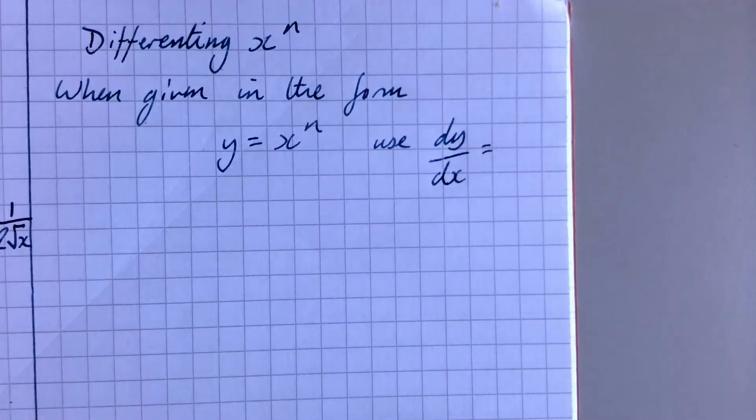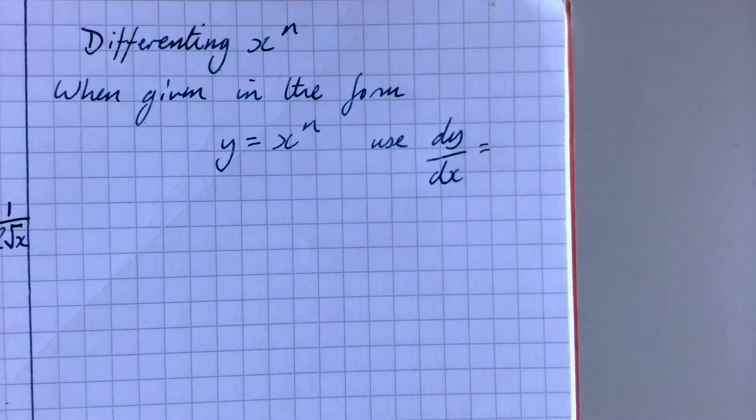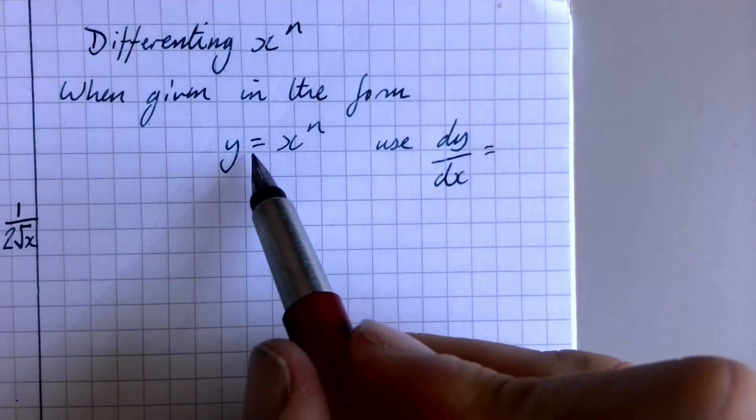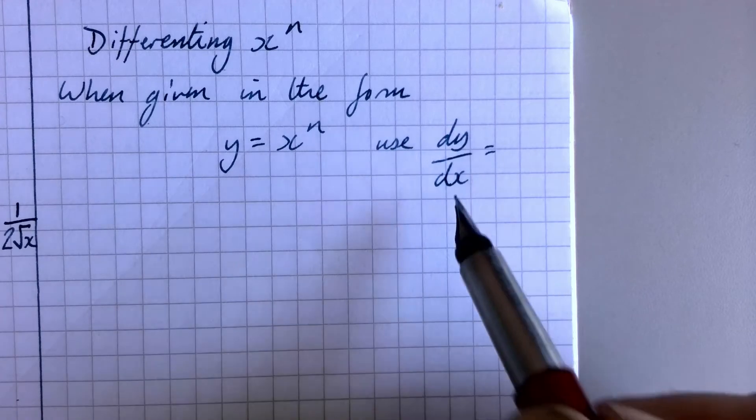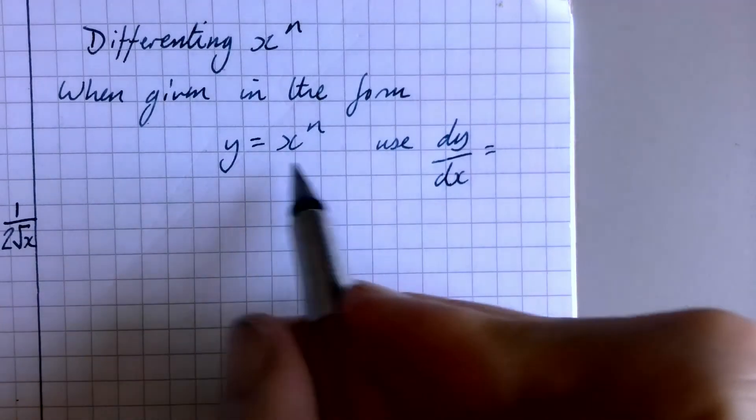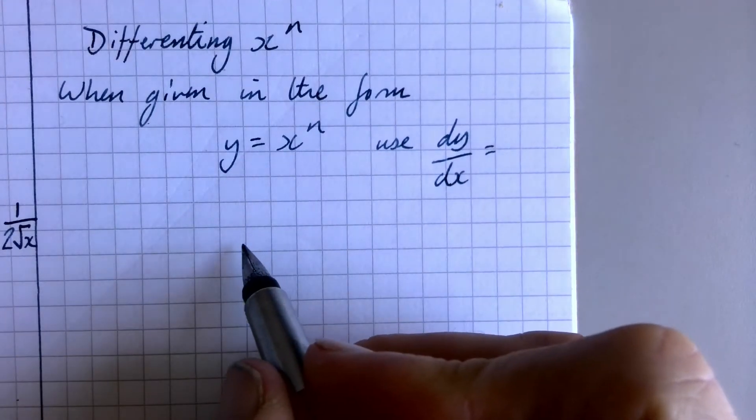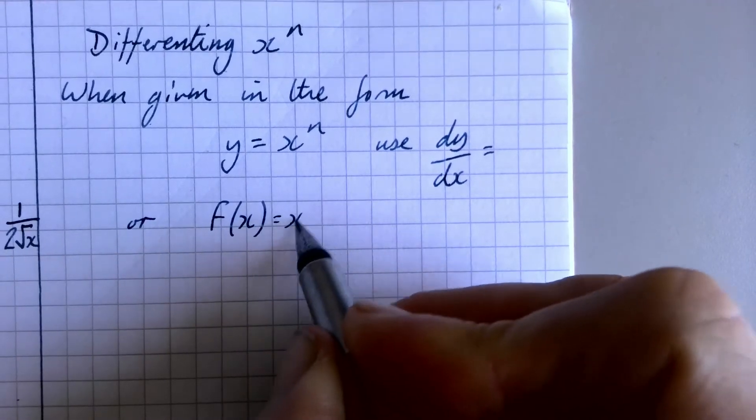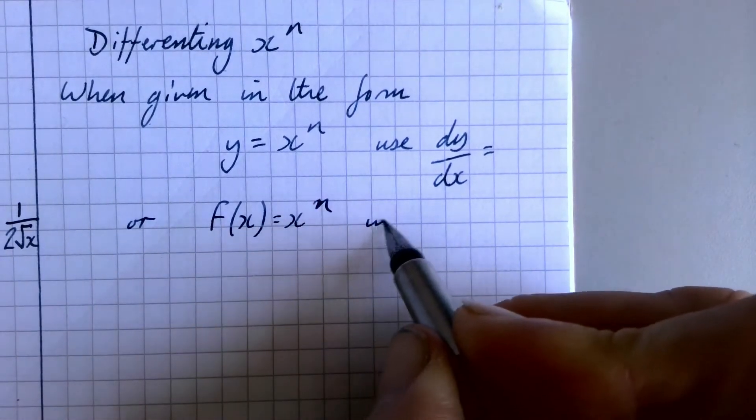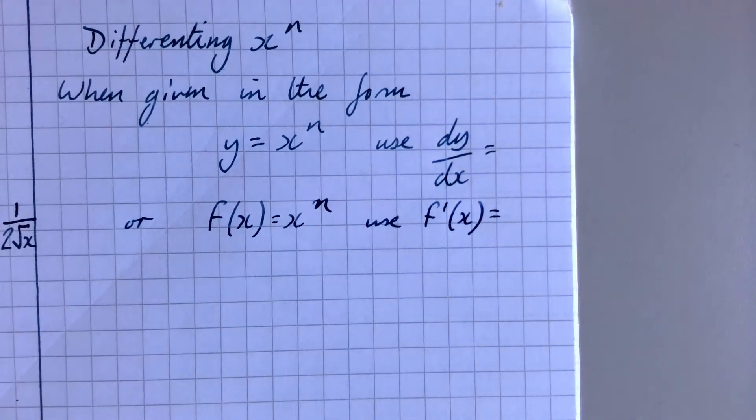Today we're going to be differentiating x to the power n. You're going to see it in two forms. When it's given in the form y equals, and then whatever your quadratic or your cubic or whatever it is, y equals x to the power n, we are going to use dy over dx. And that means the differential of y over x. So that's one way of writing it. The other form is when you're given the function of x. Then we use f dash of x.